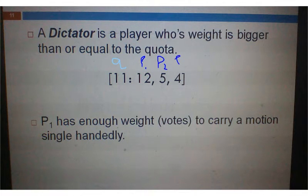But player 1, and let's label these, player 2, player 3. Player 1 has more votes than the quota needed. So if player 1 says yes, that's it. The motion's passed. No one else can really say anything about it. So that's why they're a dictator.